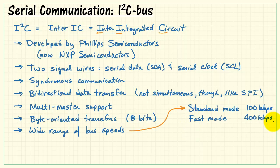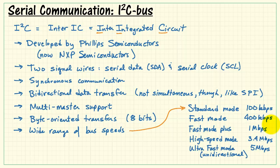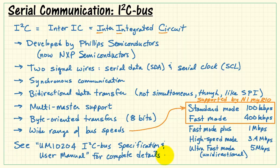We have a wide range of possible bus speeds, ranging from standard mode at 100 kilobits per second all the way up through 5 megabits per second. MyRIO supports the first two: standard mode 100 kilobits per second and fast mode 400 kilobits per second.